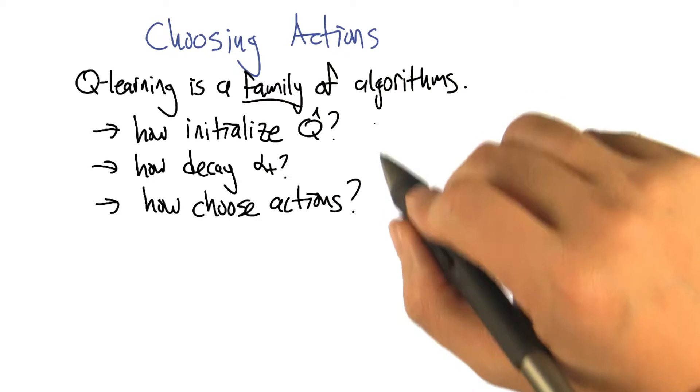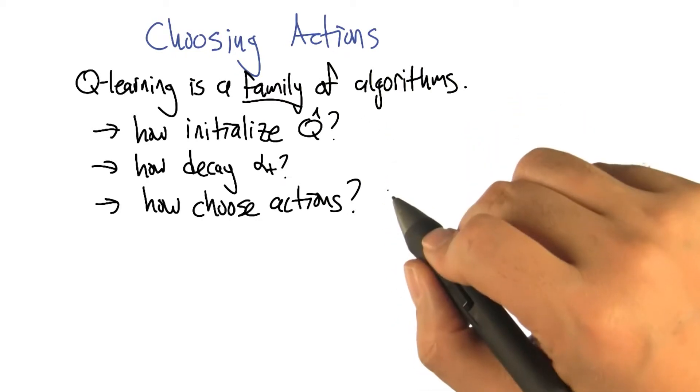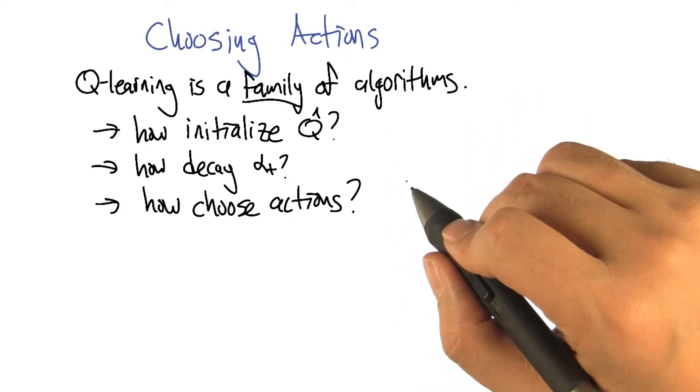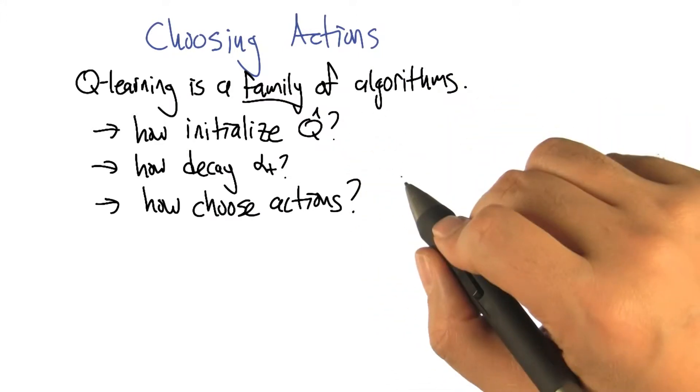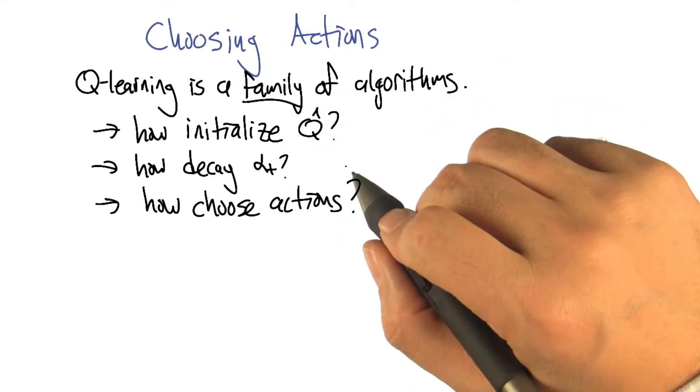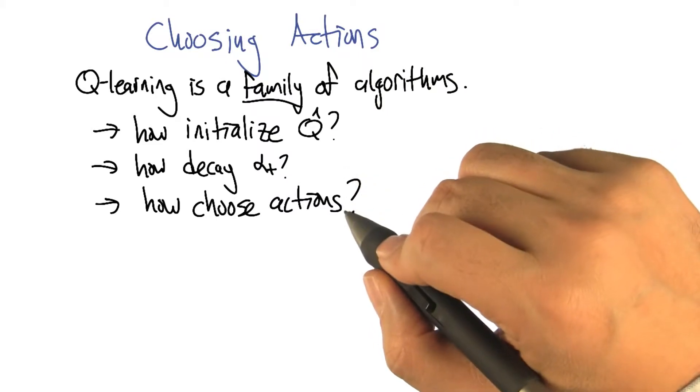Different ways of making these choices actually lead to algorithms with fairly different behaviors. In particular, when we use this in the context of an MDP. Let me ask you. What do you think might matter about, let's start with the last one, choosing actions.